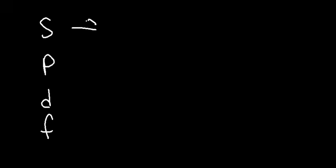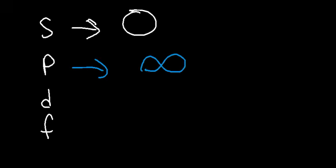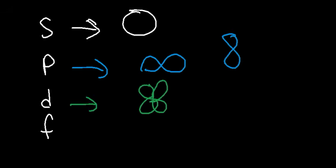In this video, we're going to talk about the SPDF sublevels. What we need to know is that S has a spherical shape — it's like a sphere. P has a dumbbell shape and can be drawn both ways. D is like a cloverleaf. And F has some unusual shape which varies.